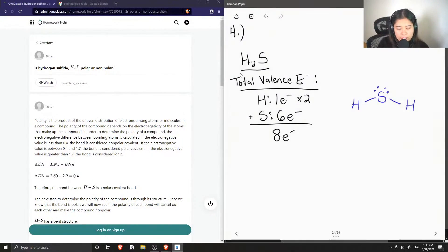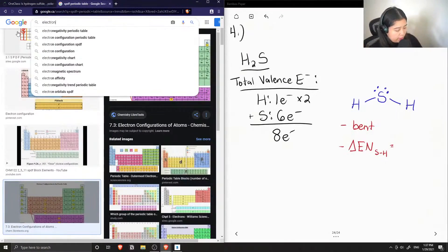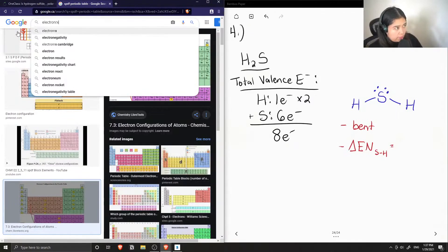Okay so now we have this bent structure and we need to find out the electronegativity difference between the sulfur and the hydrogen. So I'm just going to look up the electronegativity values of all the different elements.